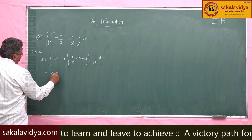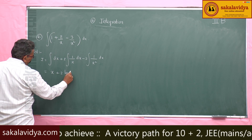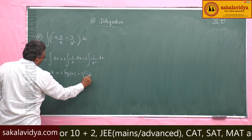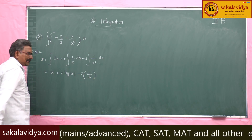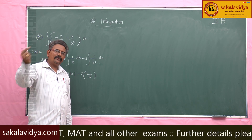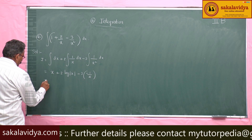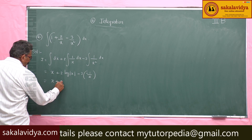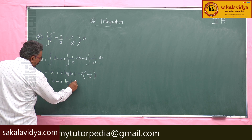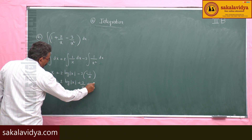This is dx plus 2 log mod x, this is minus 3 of minus 1 by x. Because minus 1 by x differentiation is 1 by x square, so integral of 1 by x square is minus 1 by x. This equals x plus 2 log mod x plus 3 by x plus constant of integration.